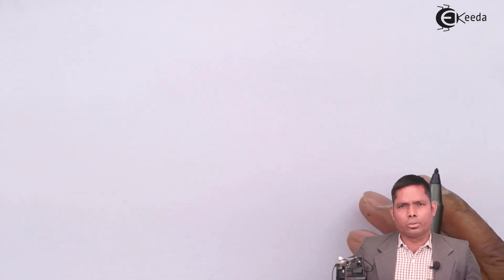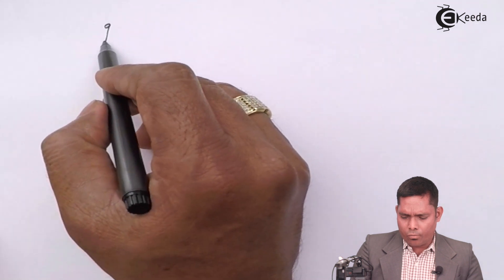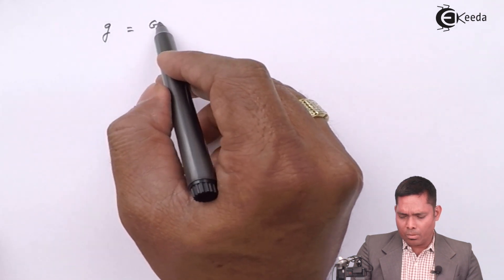Hello students, let us solve some numericals based on the previous videos. We have discussed g on the surface which is GM over R square.